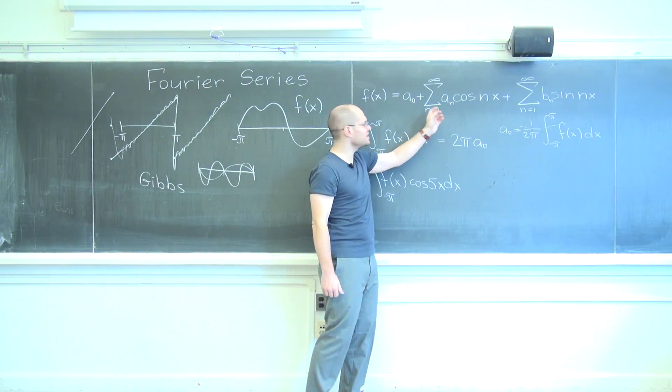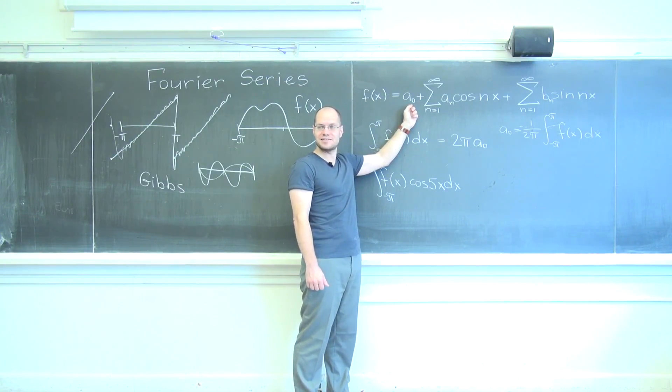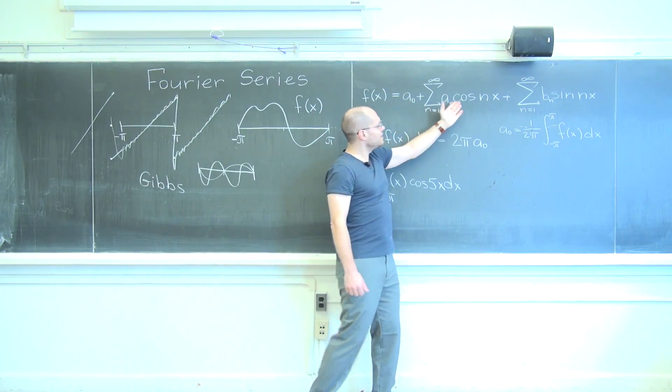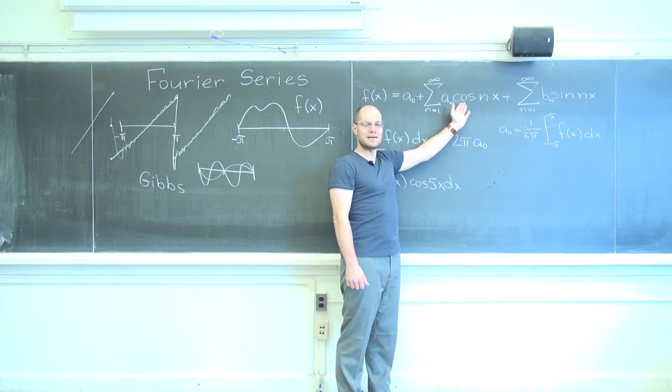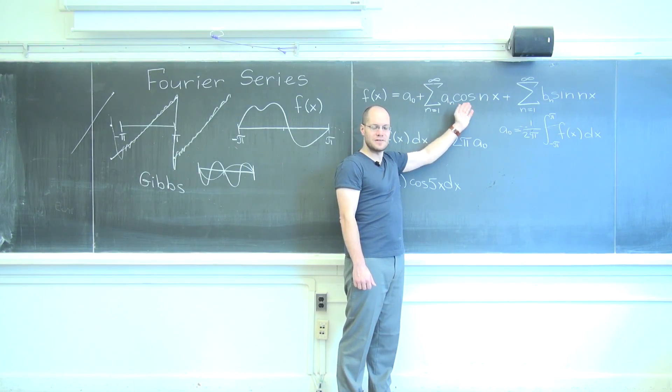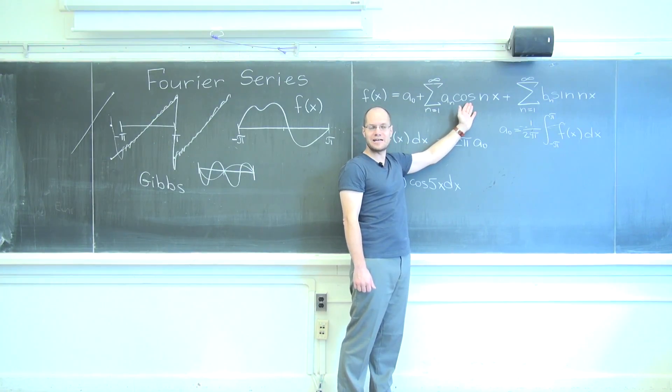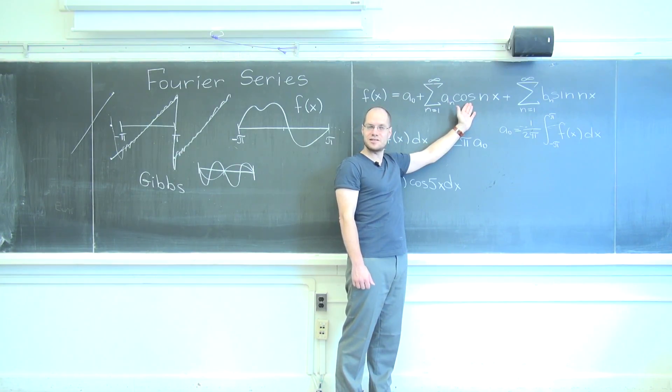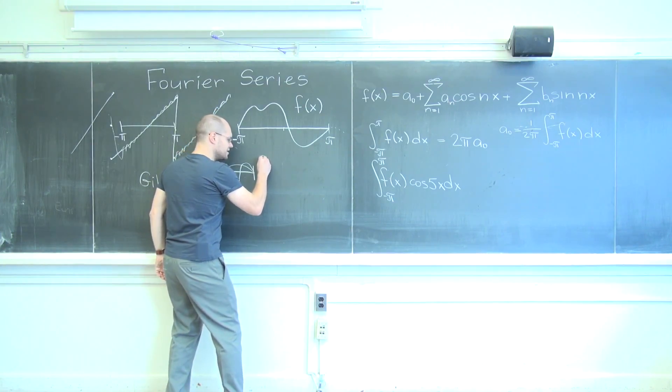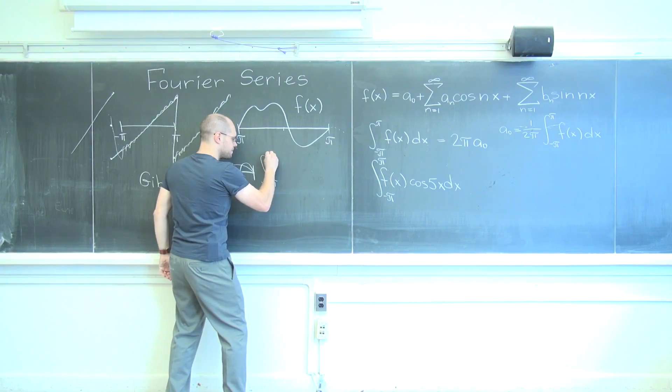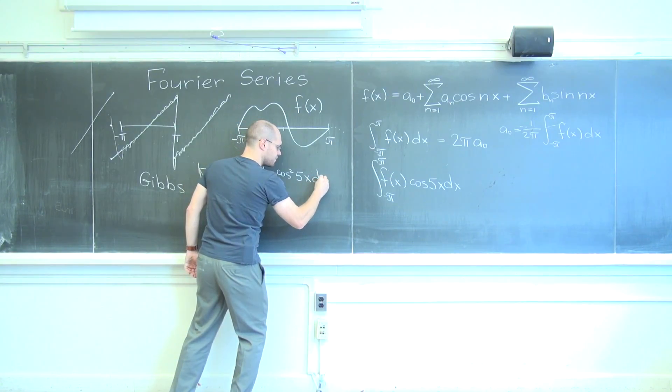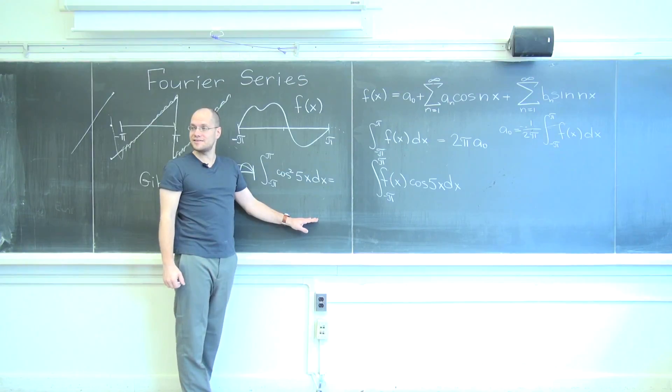Let's imagine what happens on the right hand side. Well first, a0 gets multiplied by cosine 5x and integrated. What is that? Zero. And then each one of these cosines gets multiplied by cosine 5x. And so the one that is cosine 5x, the fifth term becomes cosine squared of 5x. So that's interesting. That's positive everywhere because it's a square. So that will have certainly a value that we're interested in. Integral from minus pi to pi of cosine squared of 5x. What will this be? We'll answer that in just a moment.